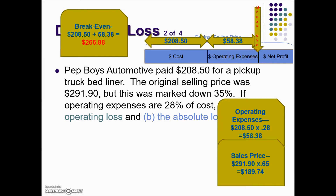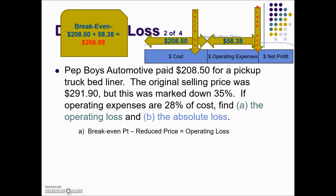Next, we determine the sale price. The original price was marked down 35%, meaning the customer pays the complement — 65% of the original selling price. So the selling price times 65% gives us the sale price of $189.74. That $189.74 falls under the cost the business paid. To find the operating loss, we take the break-even point of $266.88 minus the sale price, giving us an operating loss of $77.14.